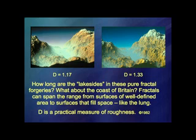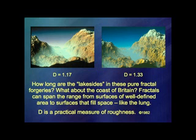These surfaces are completely artificial — done on a computer — and the only input is a number, and that number is roughness. On the left, I took the roughness copied from many landscapes. To the right, I took higher roughness. The eye, after a while, can distinguish these two very well. Humanity had to learn about measuring roughness: this is very rough, this is sort of smooth, and this is perfectly smooth. Very few things are very smooth.